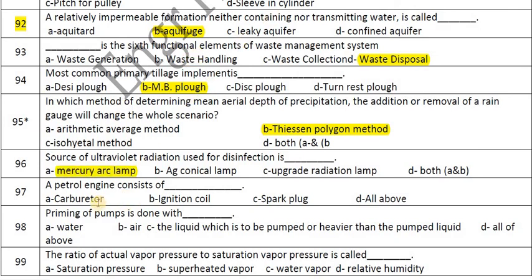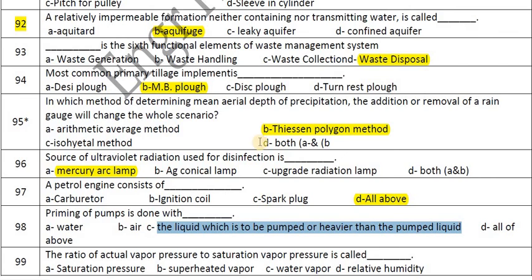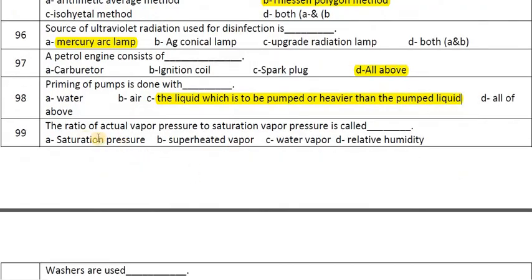The most common parameter implement is the moldboard plow. In the Thiessen polygon method of determining mean areal depth of precipitation, the addition or removal of a rain gauge will change the whole scenario. The source of ultraviolet radiation used for disinfection is a mercury lamp. A petrol engine consists of a carburetor, ignition coil, and spark plug — all of the above. Primary priming of pumps is done with the liquid which is to be pumped.